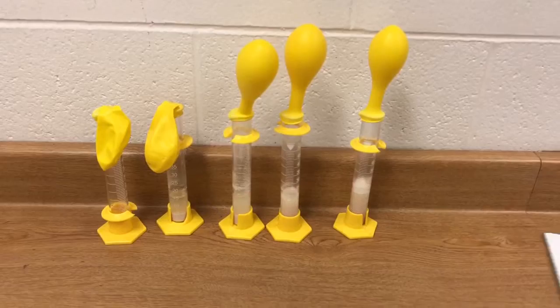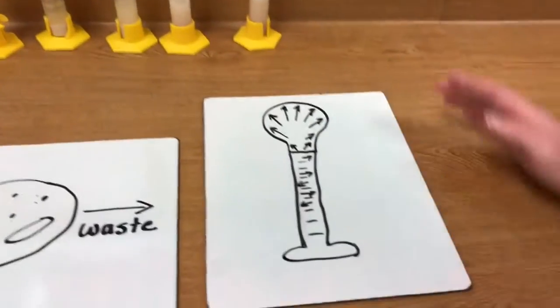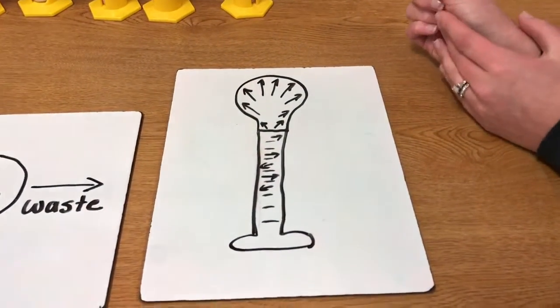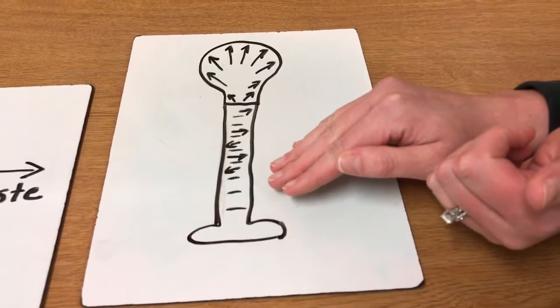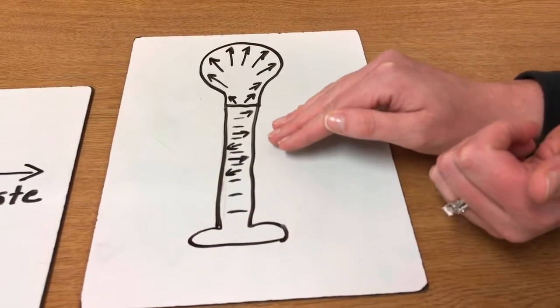And because we have these yeast cells contained within this graduated cylinder, we have our gas being produced, our carbon dioxide,